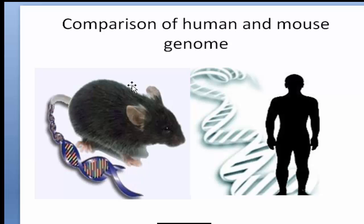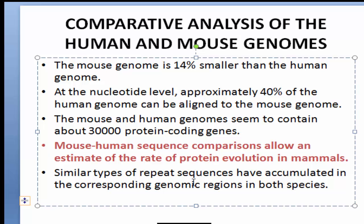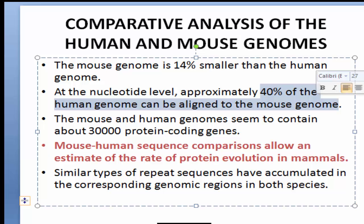Our most important topic is the comparison of the human and mouse genome — what is the relationship for which reason we use the mouse as an experimental animal for the human genome project. The mouse genome is 14% smaller than the human genome. Corresponding genomic regions in both species contain similar types of repeat sequences and similar coding base pairs. At the nucleotide level, approximately 40% of the human genome can be aligned to the mouse genome — 40% of the human genome is totally the same as the mouse genome.